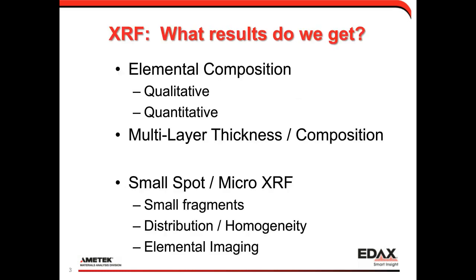X-ray fluorescence gives us elemental composition, both in a qualitative and quantitative sense, and we can do multi-layer thickness and composition with XRF as well. Small-spot micro-spot XRF lets you analyze small fragments by concentrating excitation down onto them. You can analyze more than one fragment at a time, put several fragments onto your sample handling stage, and automate acquisition. You can also look at large pieces, do distribution analysis to determine homogeneity, and do elemental imaging to get a picture of elemental distribution.